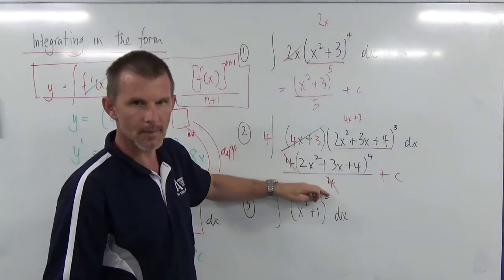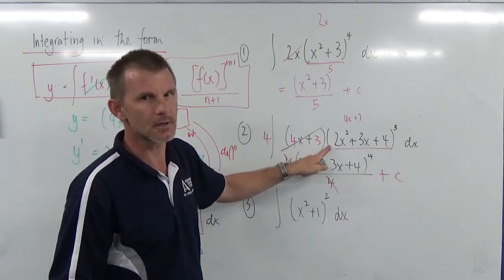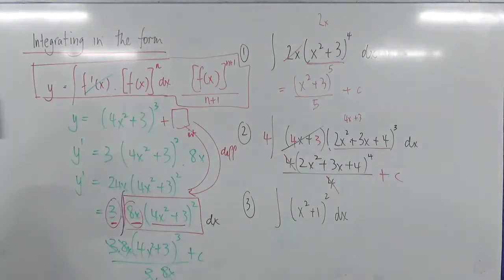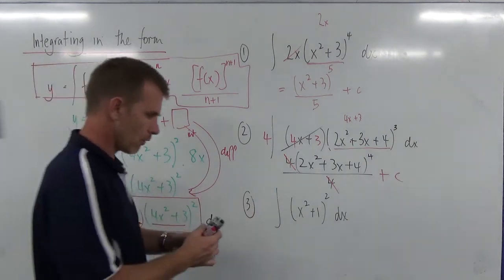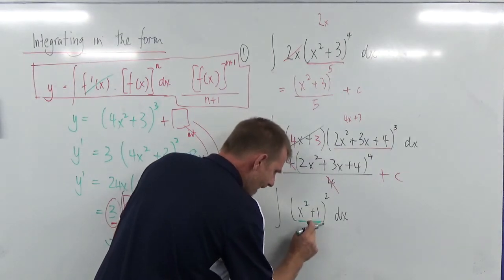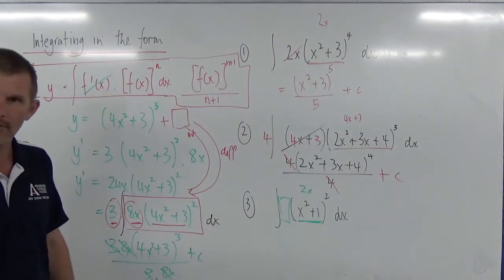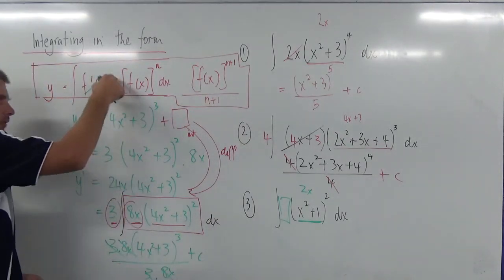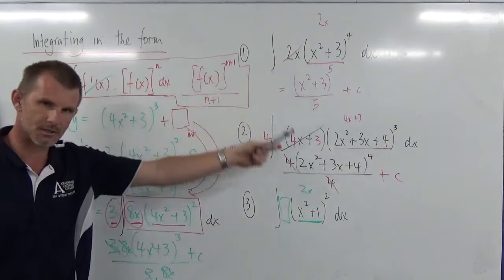With both of these, if you're unsure about your answer, differentiate it — if you don't get back to where you started, you've done something wrong. Now the last one — have a look at this for a minute. This one's a bit of a trick. It looks like you raise the power by 1 and do this — no, don't do that. The reason why: the derivative of that inside is 2x, and you didn't have 2x out front. You don't have the derivative out front — you're not in this format. This is a trick question.